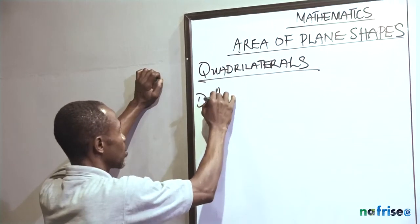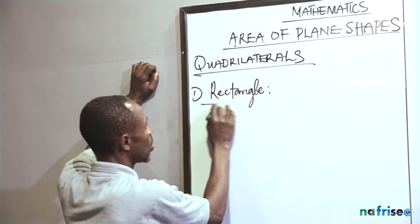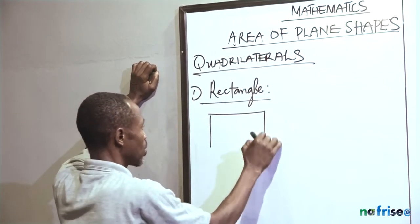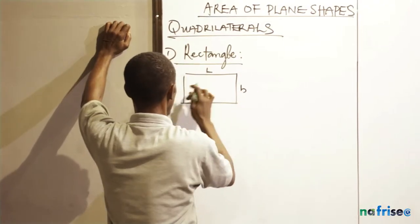Rectangle. For the rectangle, you have a shape that has length and breadth with two opposite sides being equal.